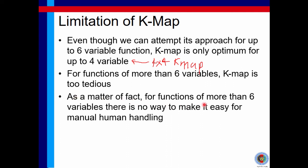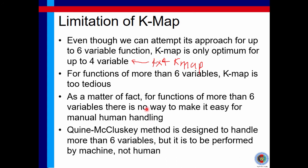As a matter of fact, for functions of more than six variables, there's no way to make it easy for manual human handling. So the alternative is the Quine-McCluskey method that is designed to handle more than six variables, but it is to be performed by machine, not human.